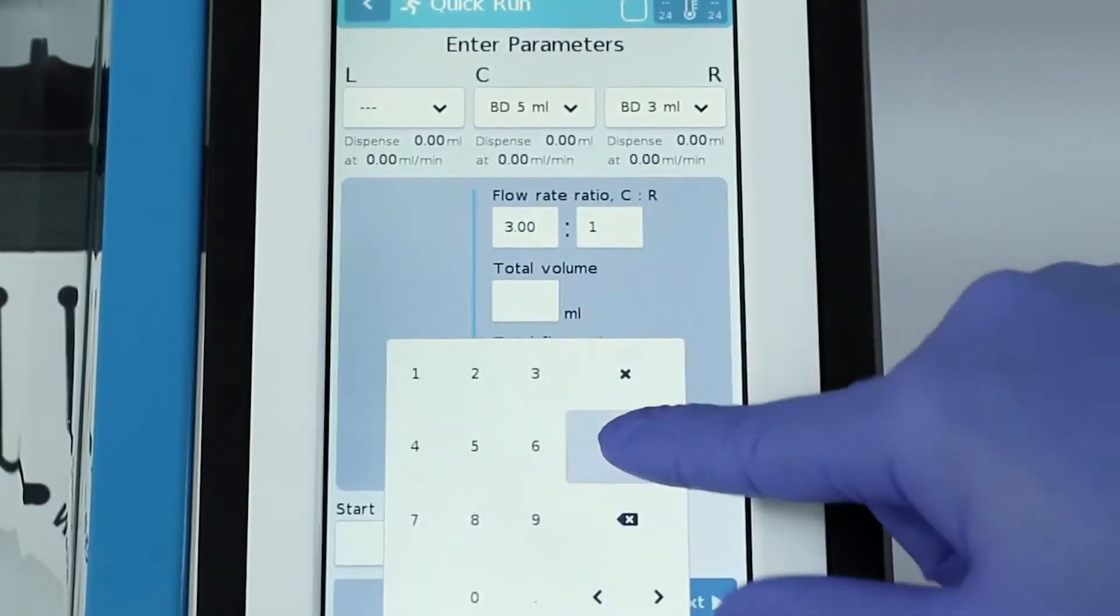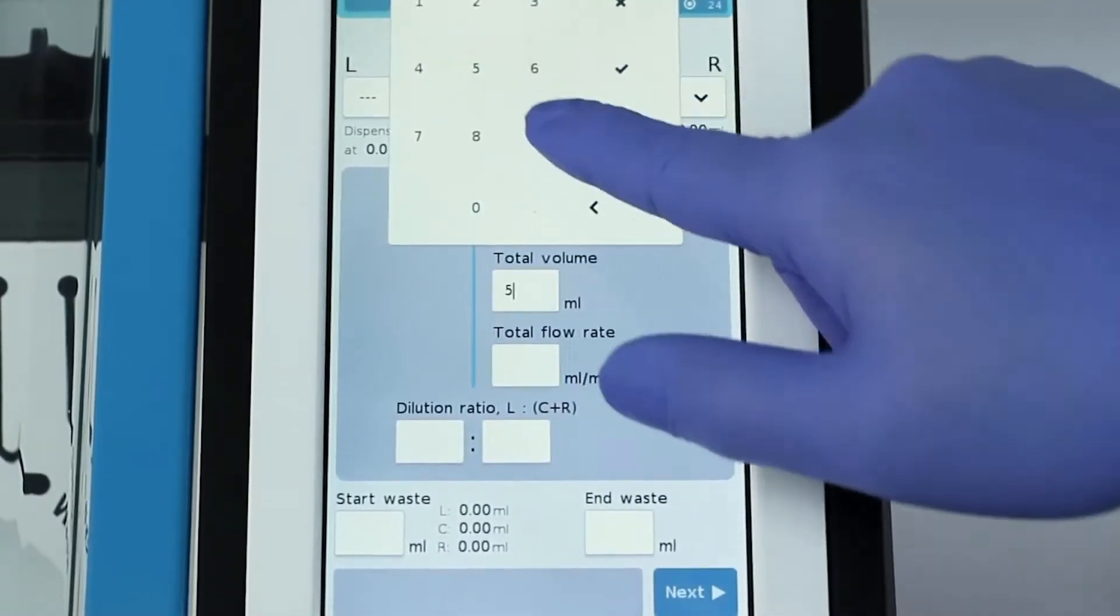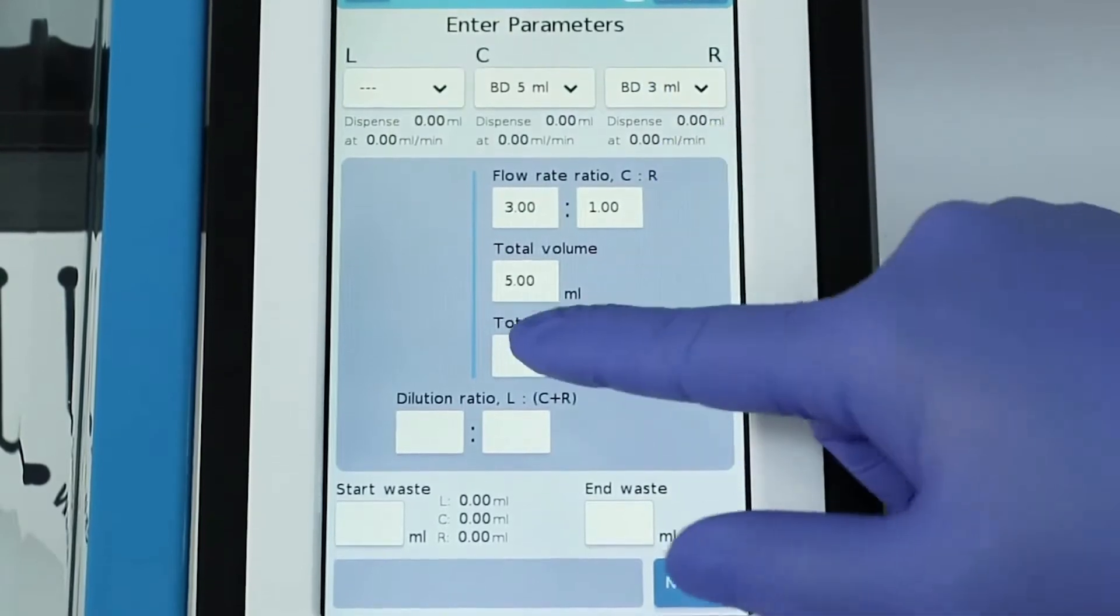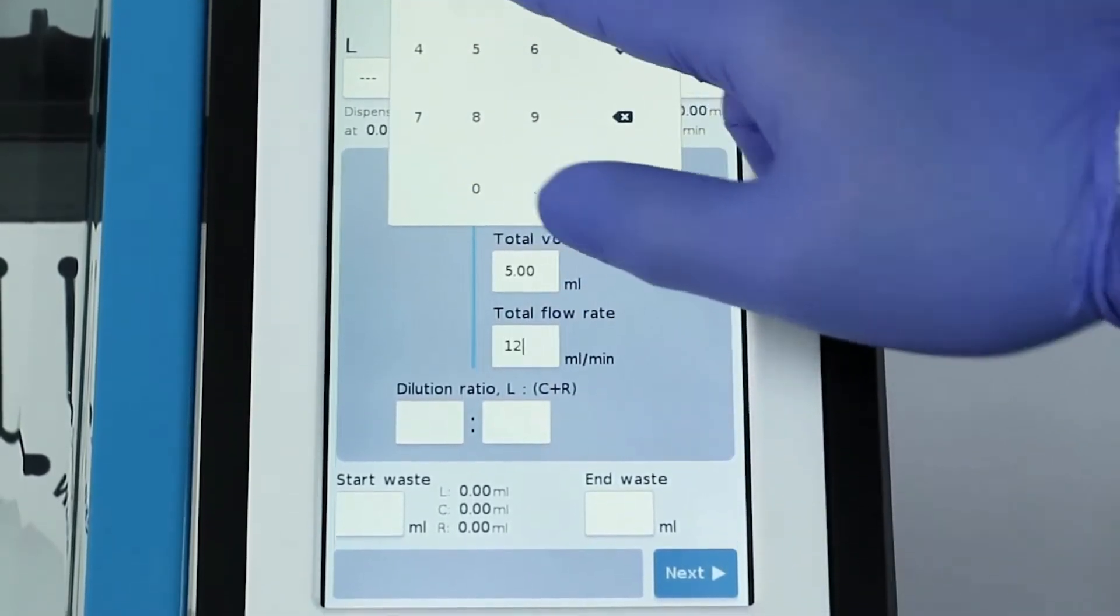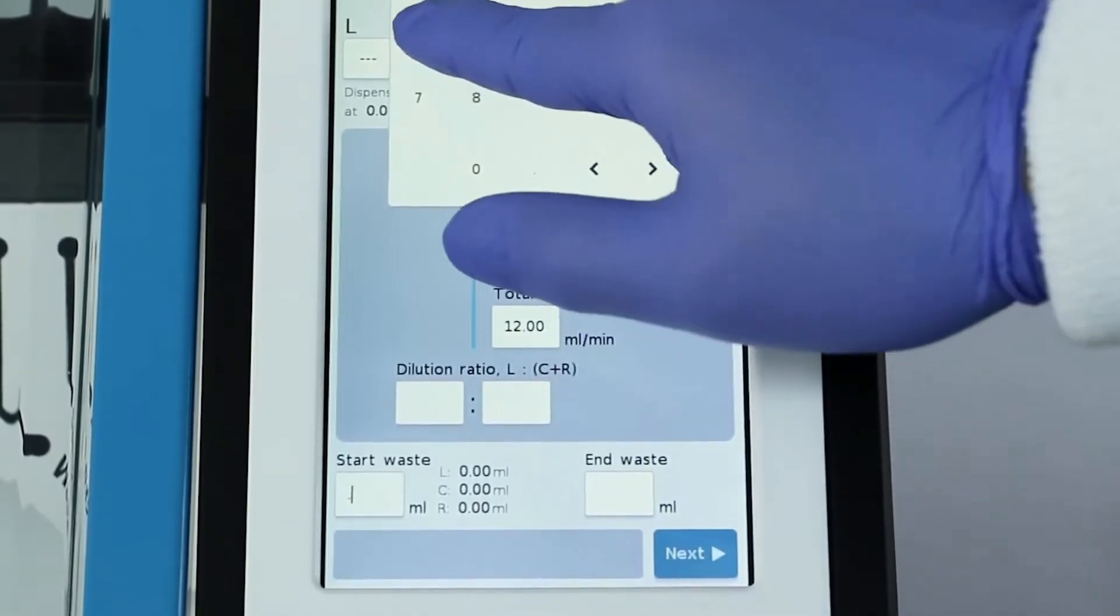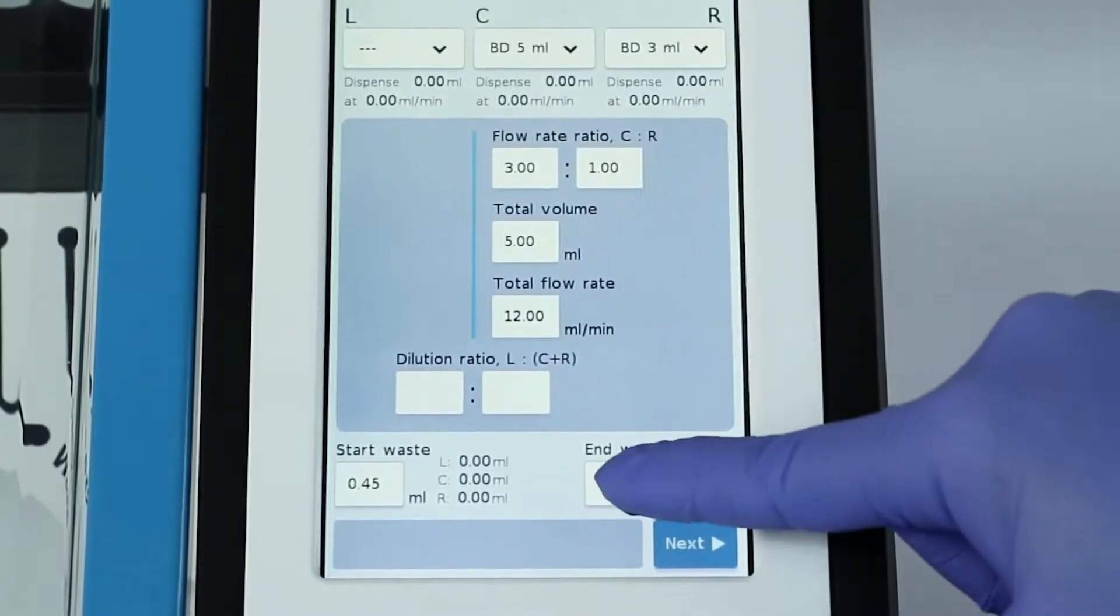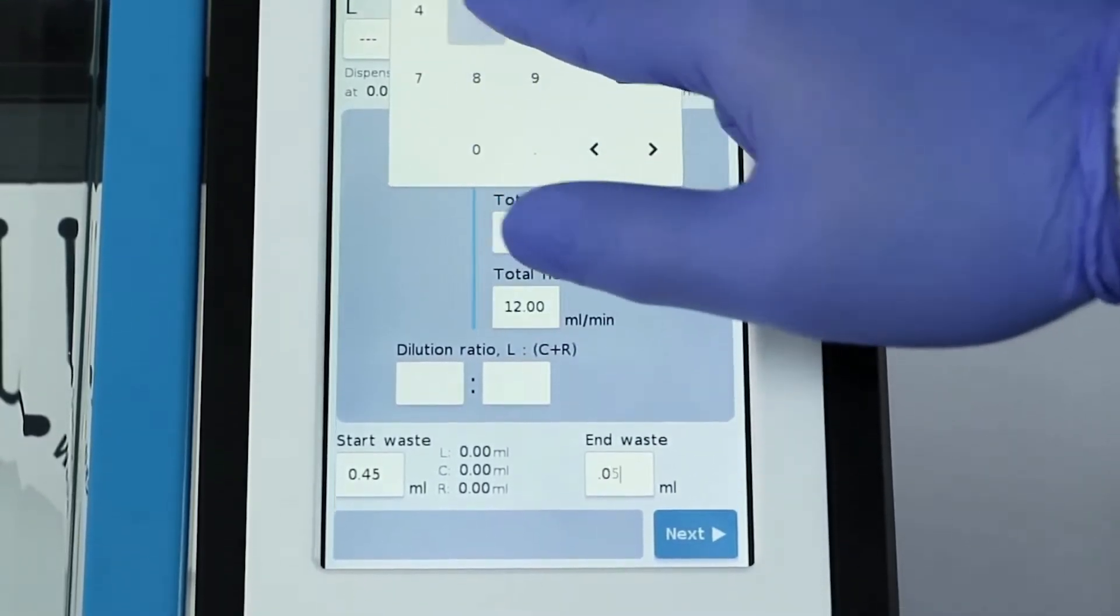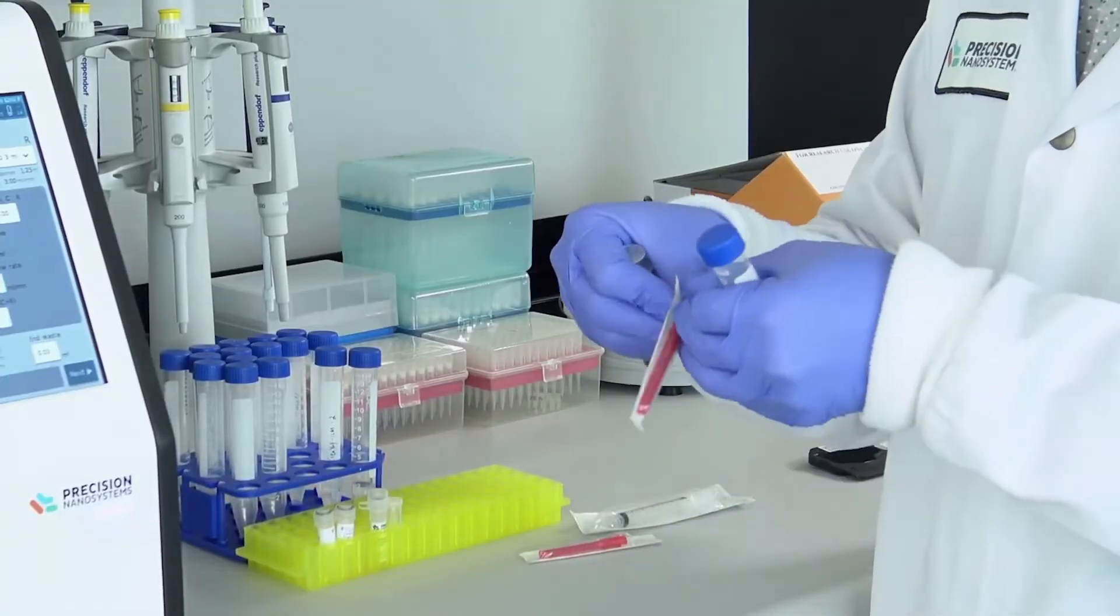We took our NxGen technology, which was designed for GMP production, scaled it down, and designed a system around it to enable scientists of any scale level to explore the nanomedicine design space. The Ignite's interface puts key parameters that define the conditions of particle formation, such as total flow rate and flow rate ratio, literally at your fingertips.